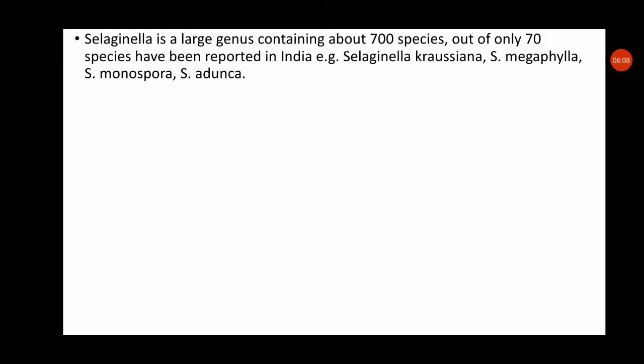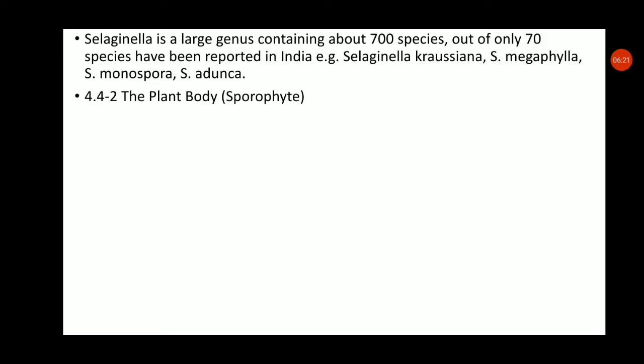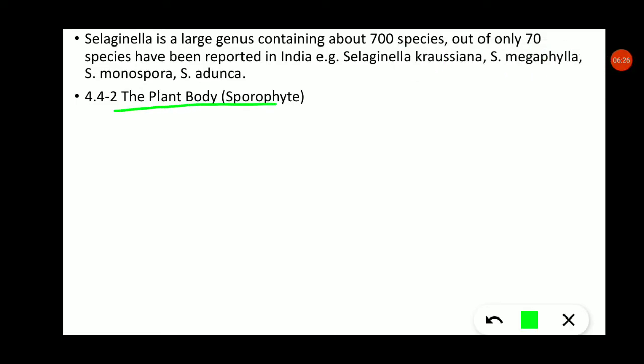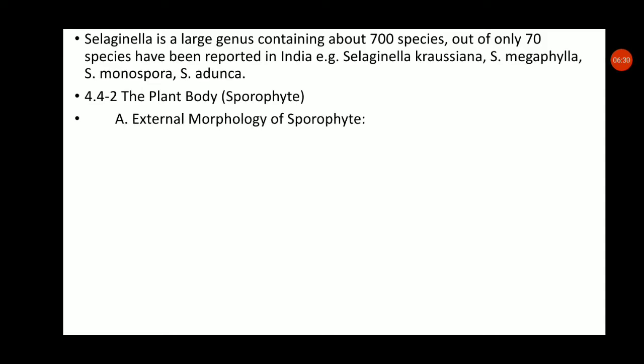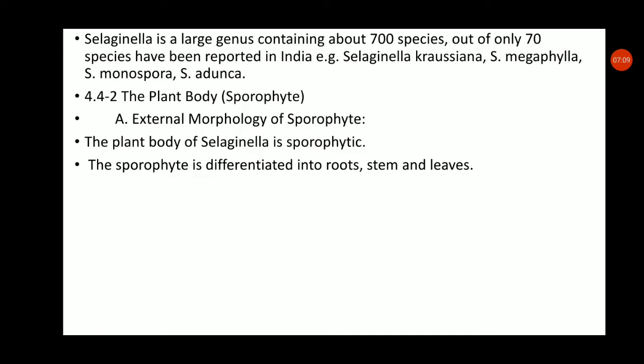Now we can see the external morphological characters of Selaginella. The plant body is known as the sporophyte. In Selaginella, the sporophyte is divided into root, stem, and leaves. The sporophytic plant body forms spores and is dominant; the gametophytic plant body has a short life in pteridophytes.